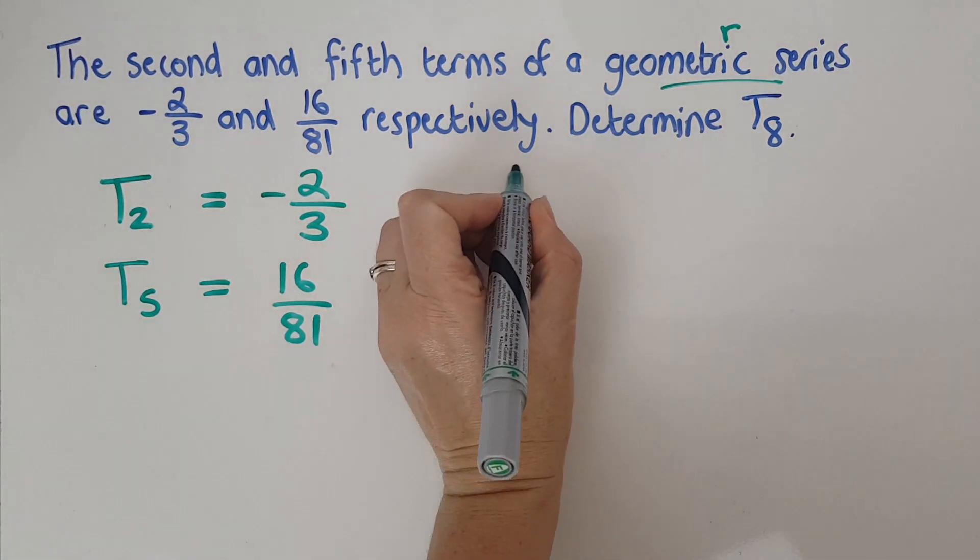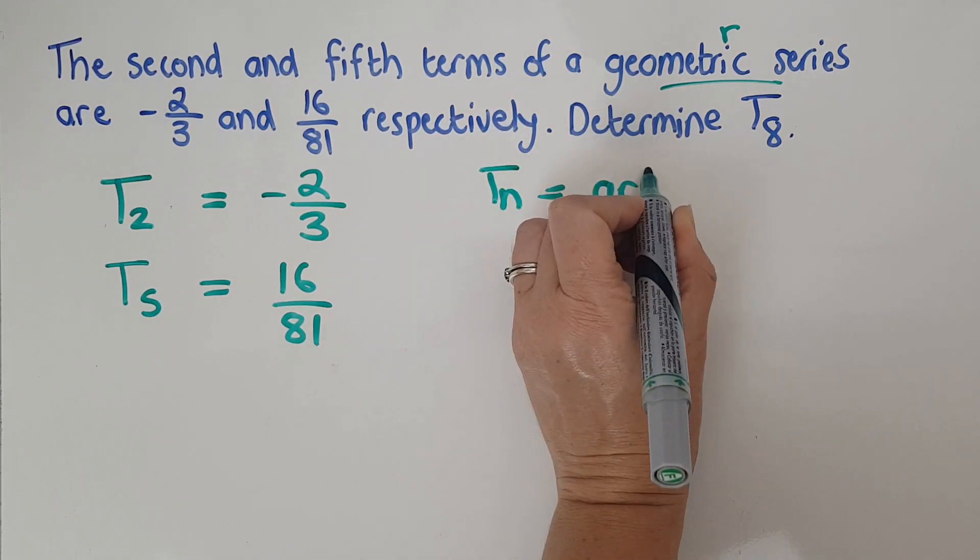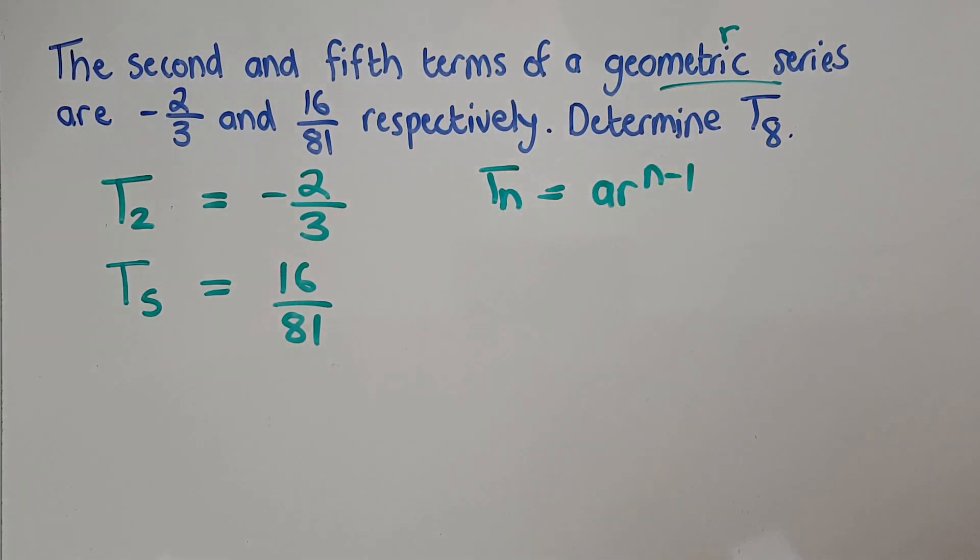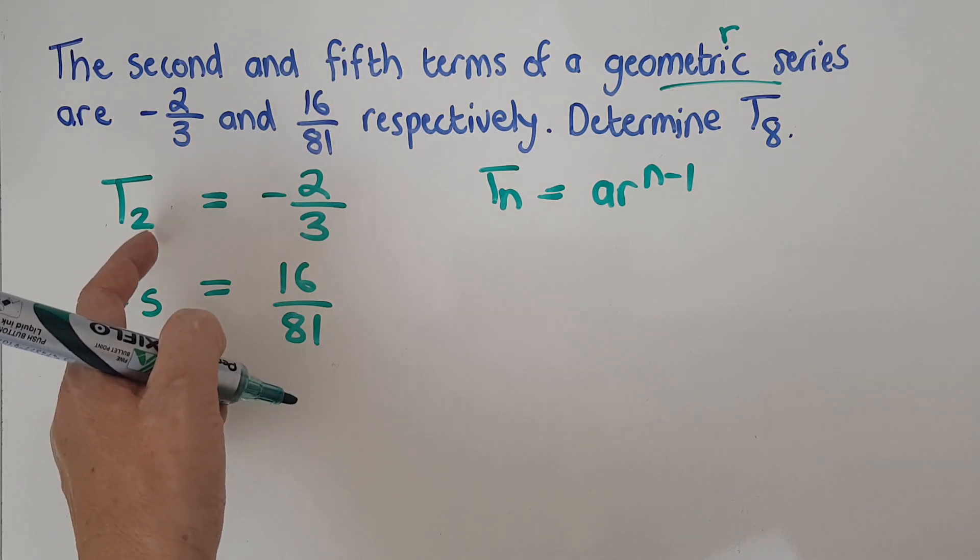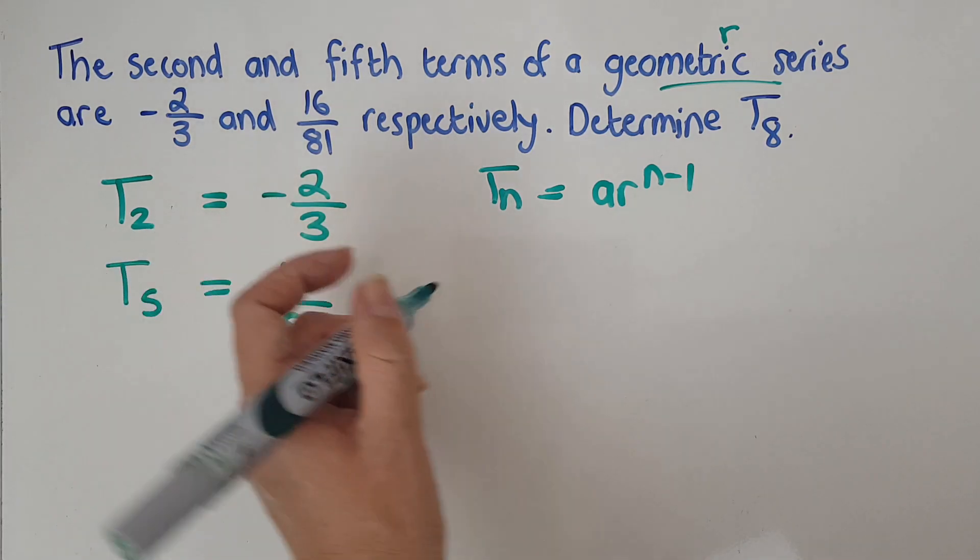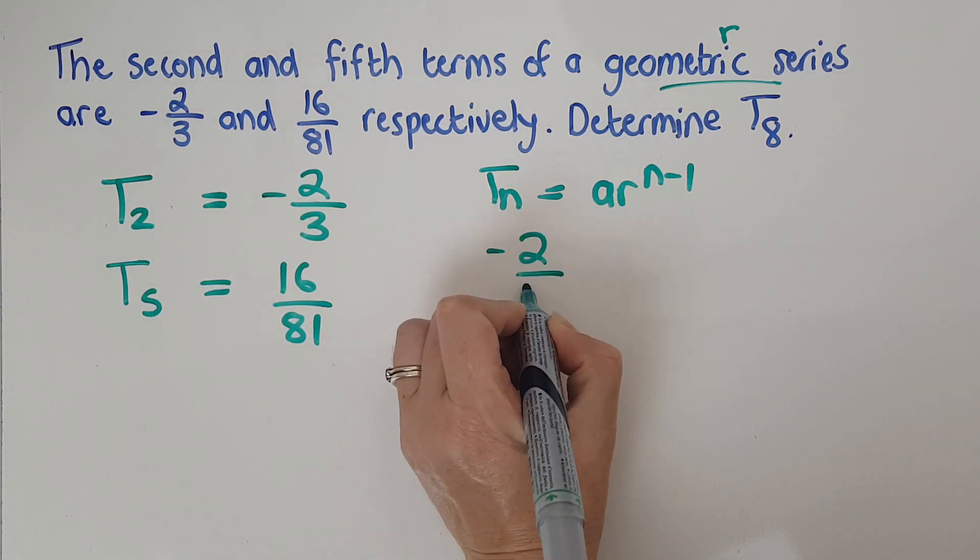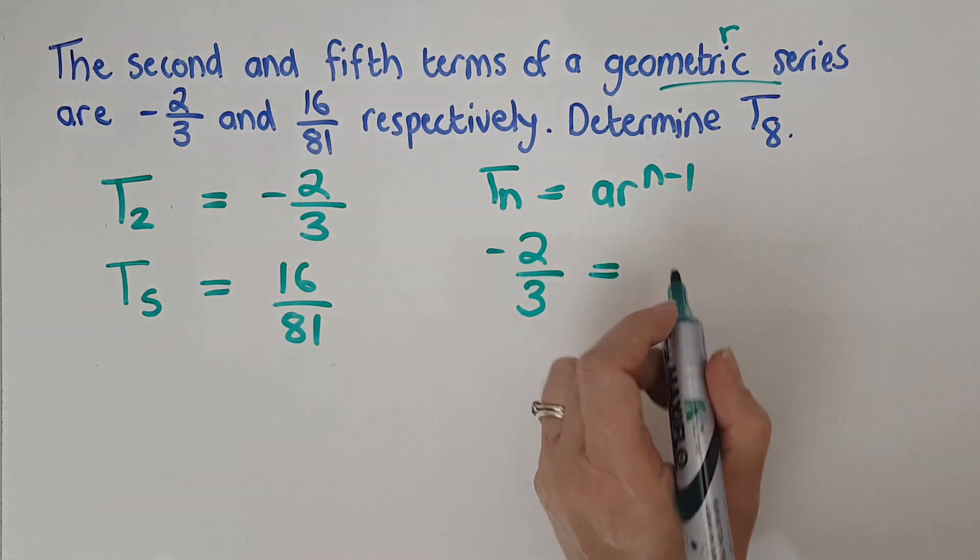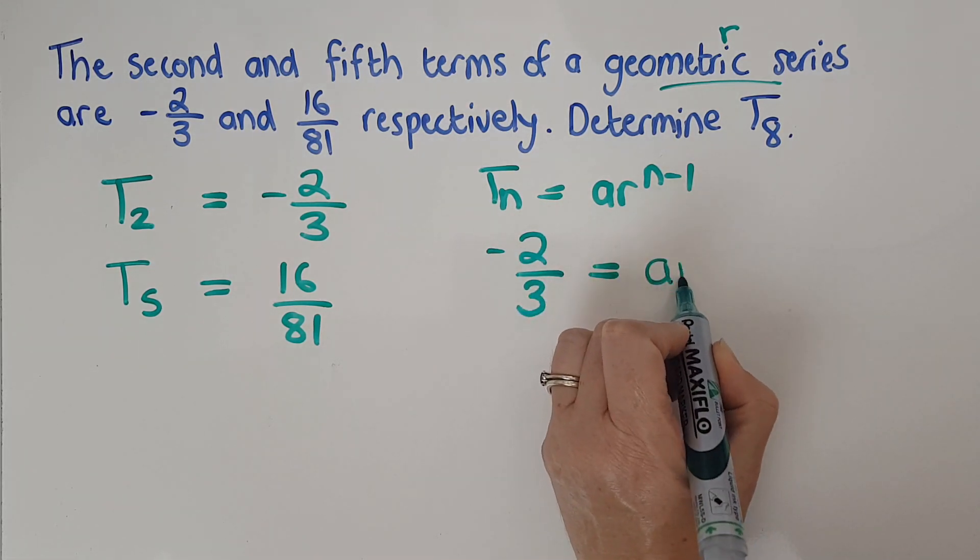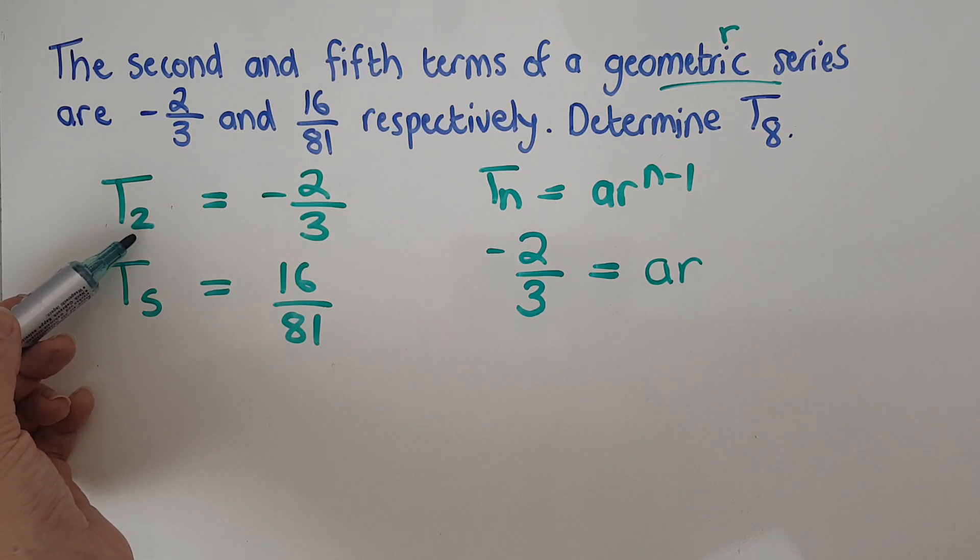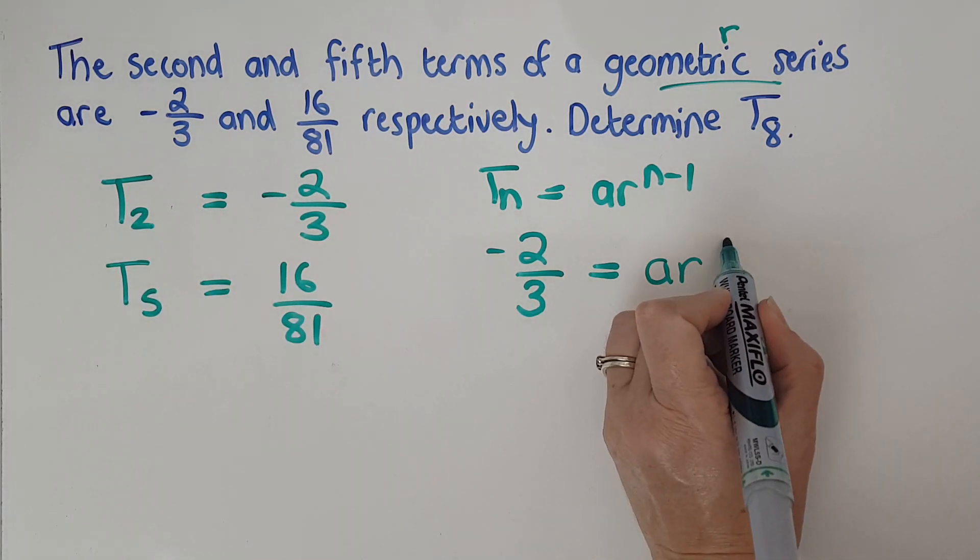So we would normally have TN is AR to the N minus one, right? So now T2 is negative two thirds. So negative two thirds replaces the TN, and then I'm going to have AR to the 2. N minus one is one.